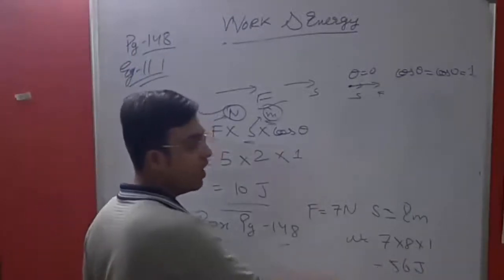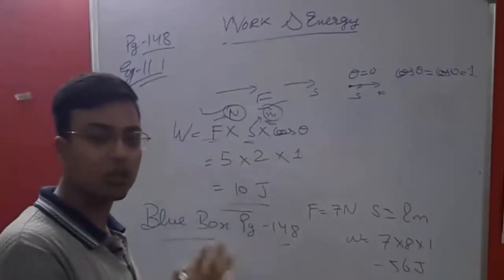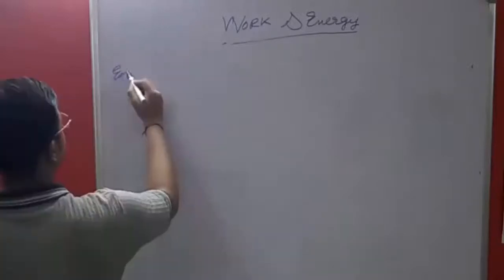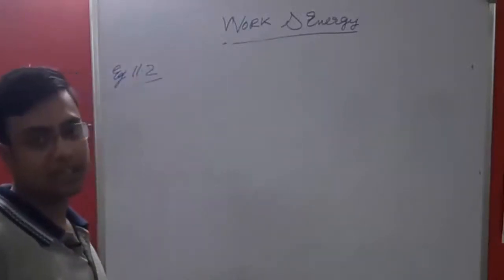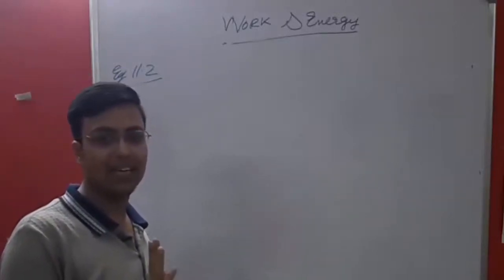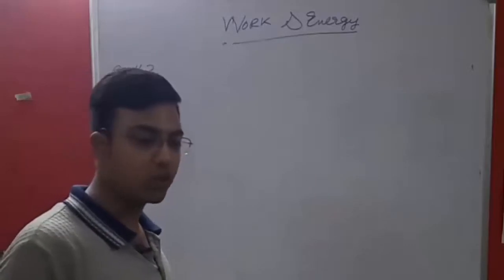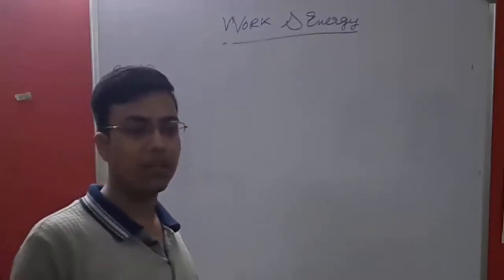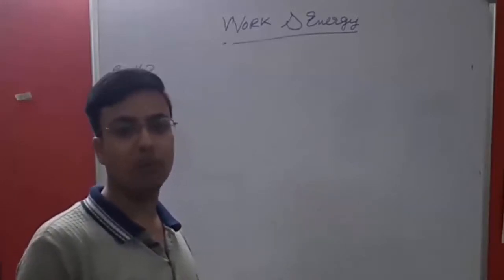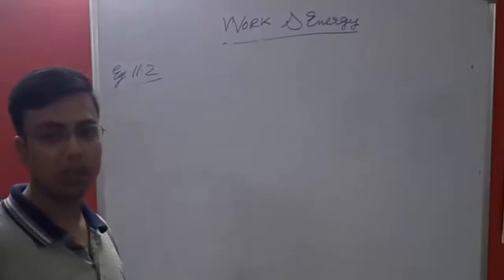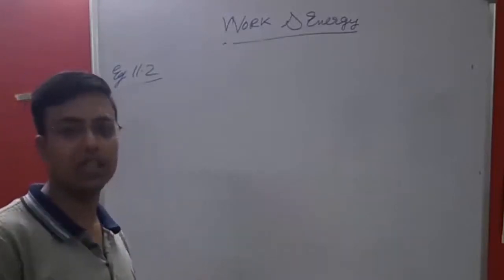If the units given are not in newton or meter, convert them first. For example, 1 kilometer = 1000 meters. Always keep track of units in science. If you don't write the unit, half a mark will be cut — it doesn't matter how correctly you calculated the answer. In better schools and board exams, slightly manipulated questions like Example 11.2 are more likely to appear.